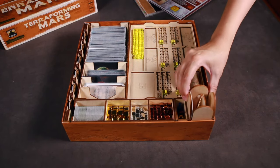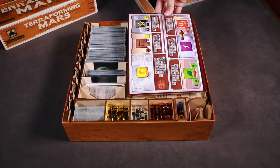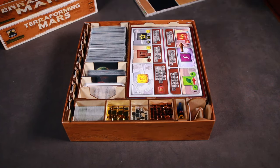Finally, the rocket token tray is placed here. The player boards can be placed here, followed by the game board and rule book.